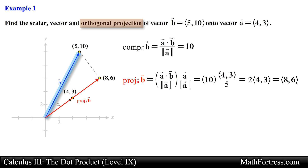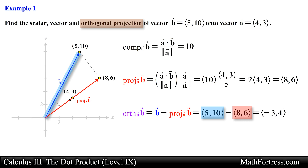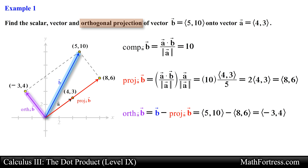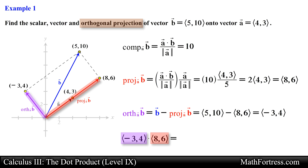Finally, we use this vector to find the orthogonal projection of vector b onto vector a. We take vector b and subtract the vector projection from it. Doing that and simplifying, we obtain the following vector for the orthogonal projection. Notice that the orthogonal projection and the vector projection represent the components of vector b, and these components are orthogonal to one another. We can quickly verify this by finding the dot product between these components, and as expected the expression simplifies to 0.